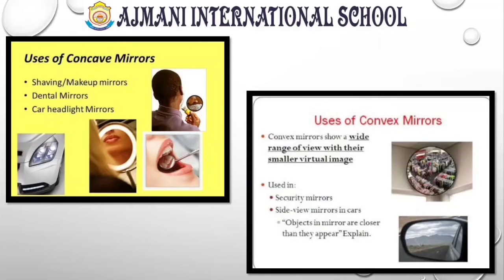Where do we use these different types of mirrors? Concave mirrors are used for shaving and makeup because they give very minute highlights. In dental care also, dentists use concave mirrors. In car headlights, concave mirrors are used too. Convex mirrors show a wide range of view with their smaller virtual images, and that is why they are used in security cameras.